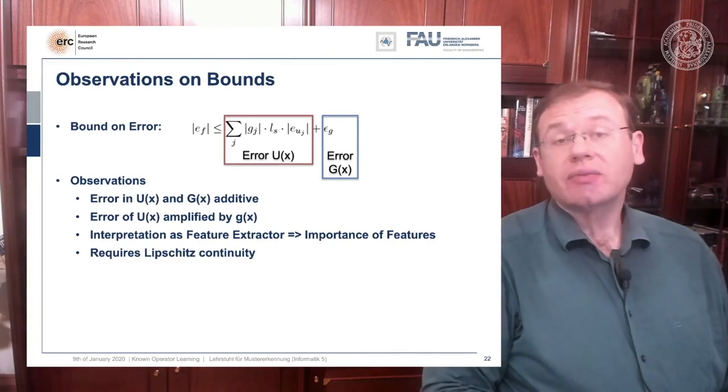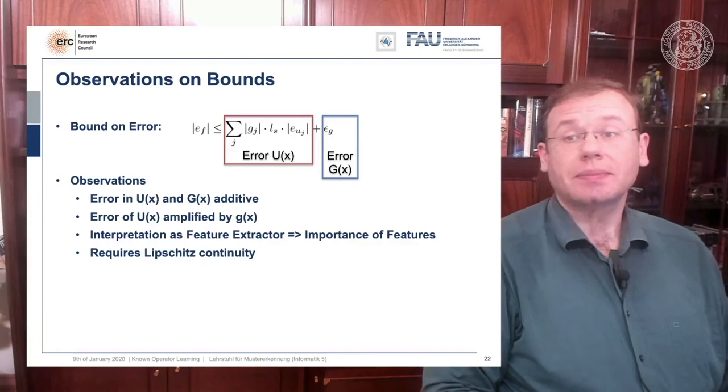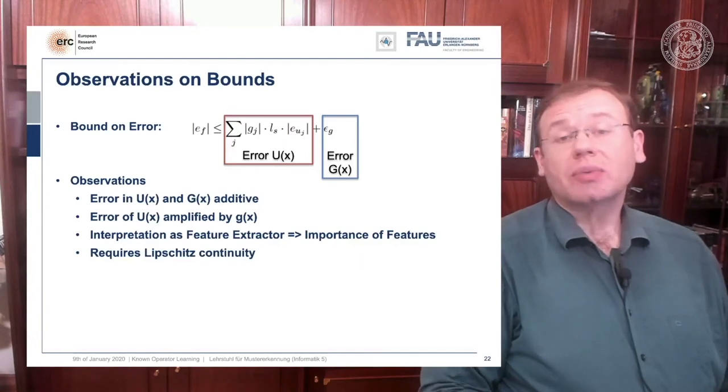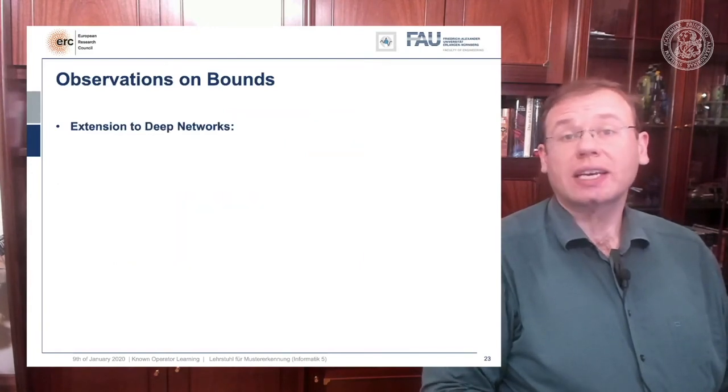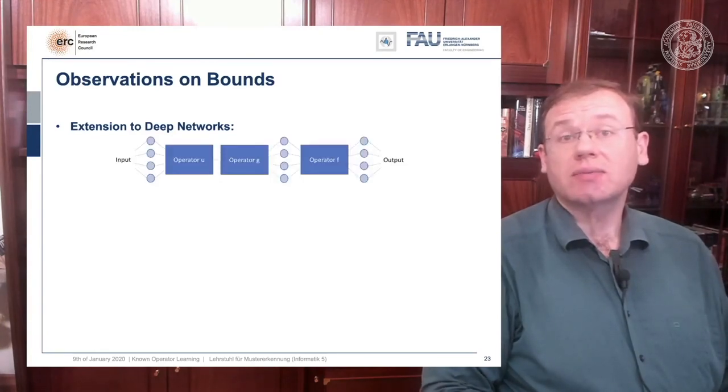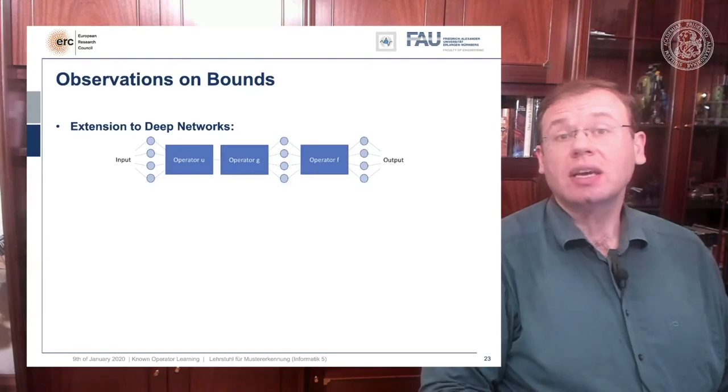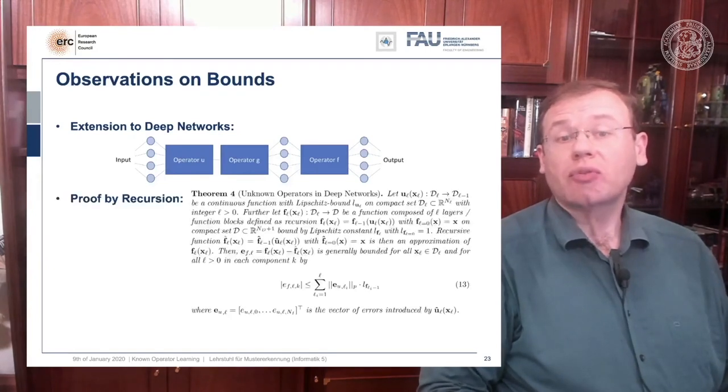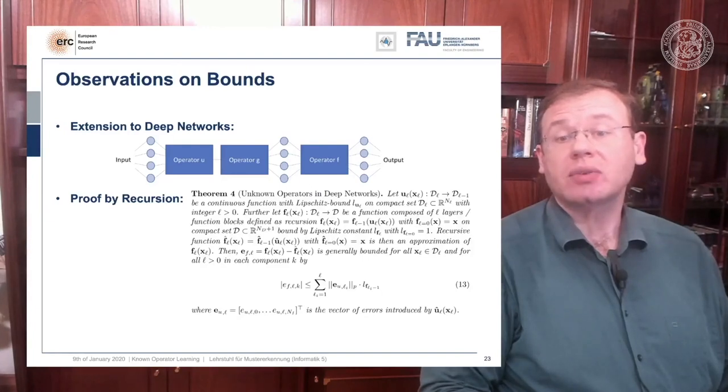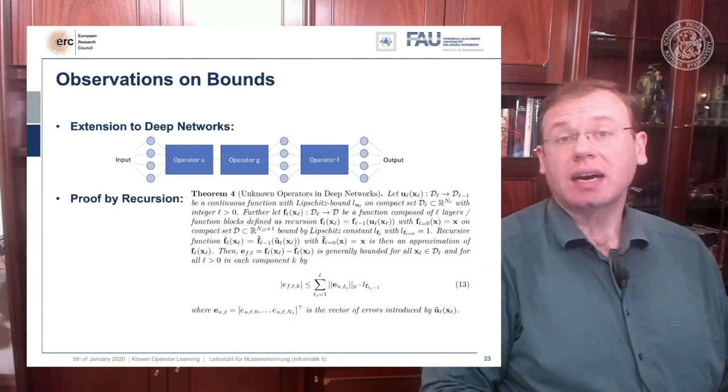Note that when deriving all of this we required Lipschitz continuity. Okay, now you may say this is only for two layers, but we also extended this for deep networks. So you can actually do this. Once you have the two layer constellation, you can find a proof by recursion that there's also a bound for deep networks.